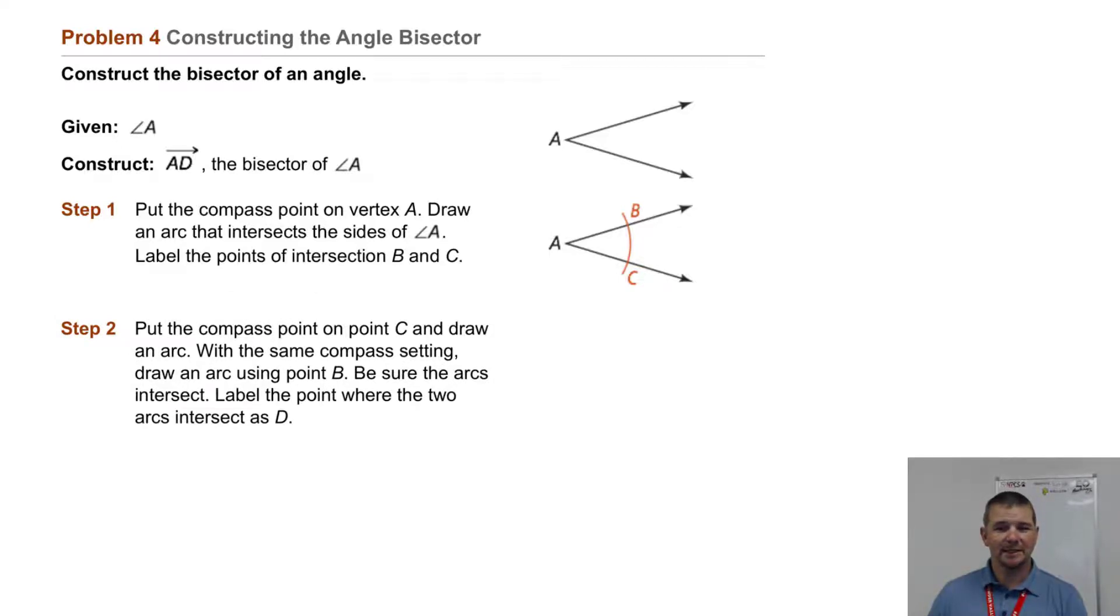With the same compass setting, draw an arc using point B. Be sure the arcs intersect. Label the point where the two arcs intersect as D.